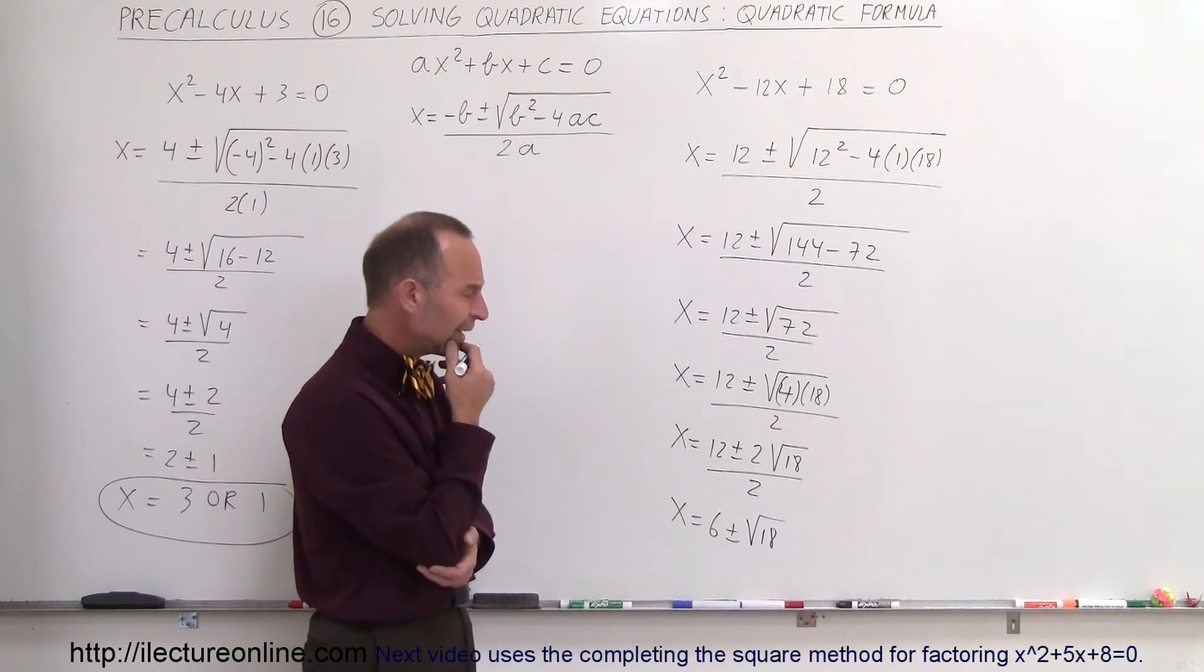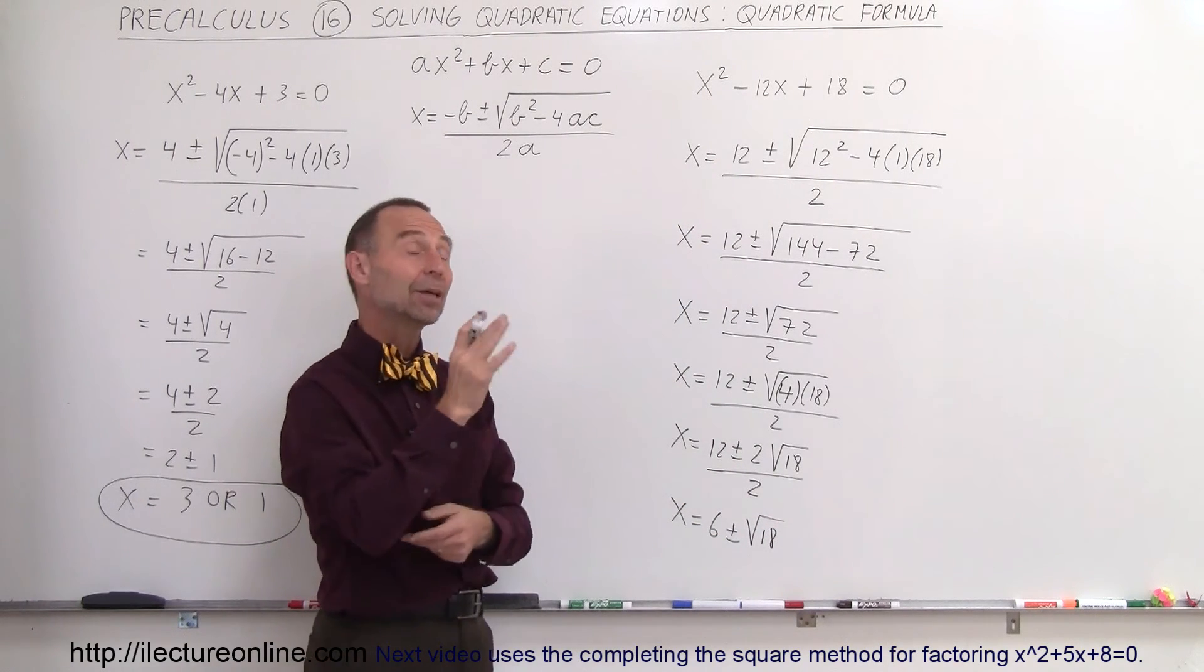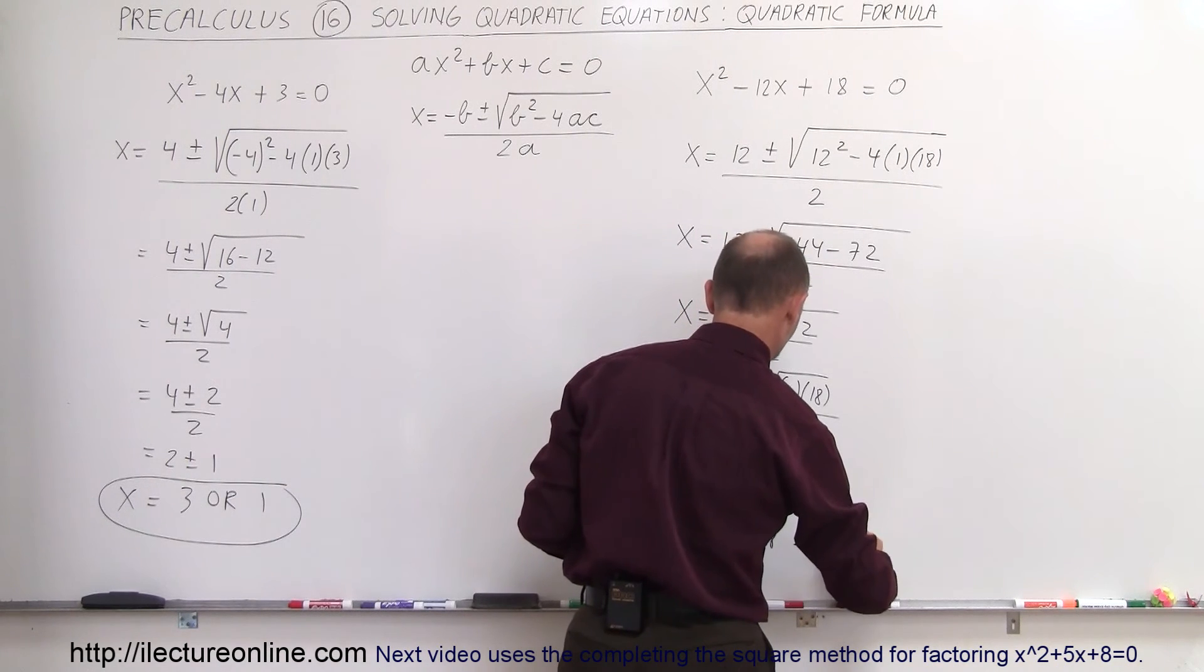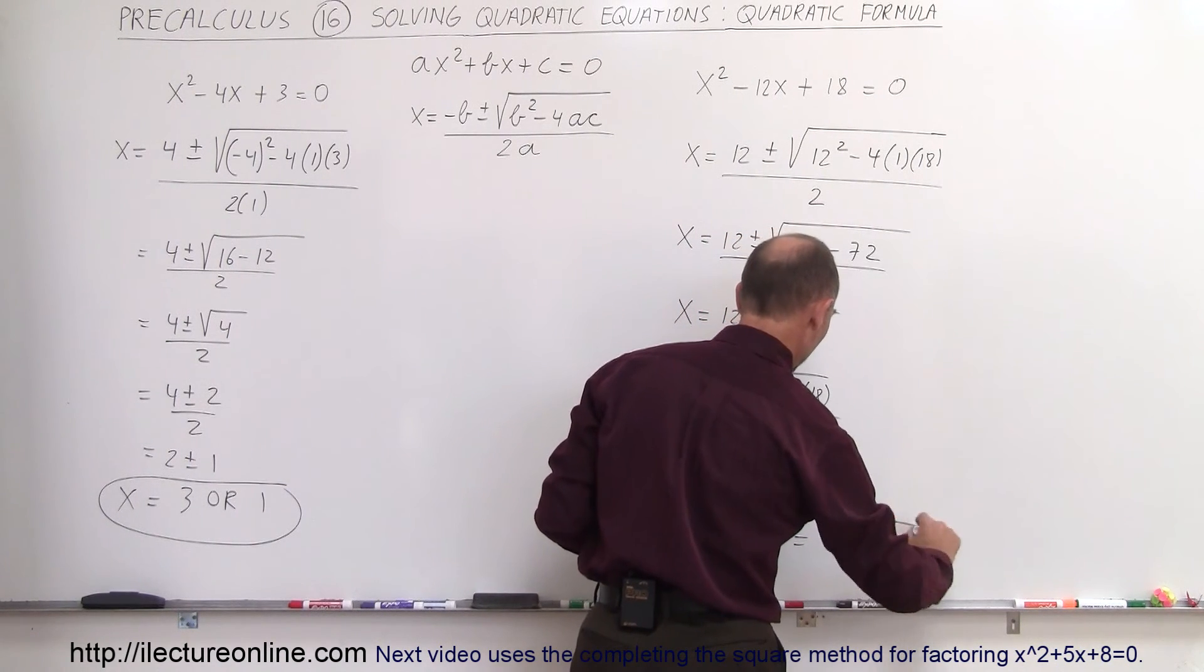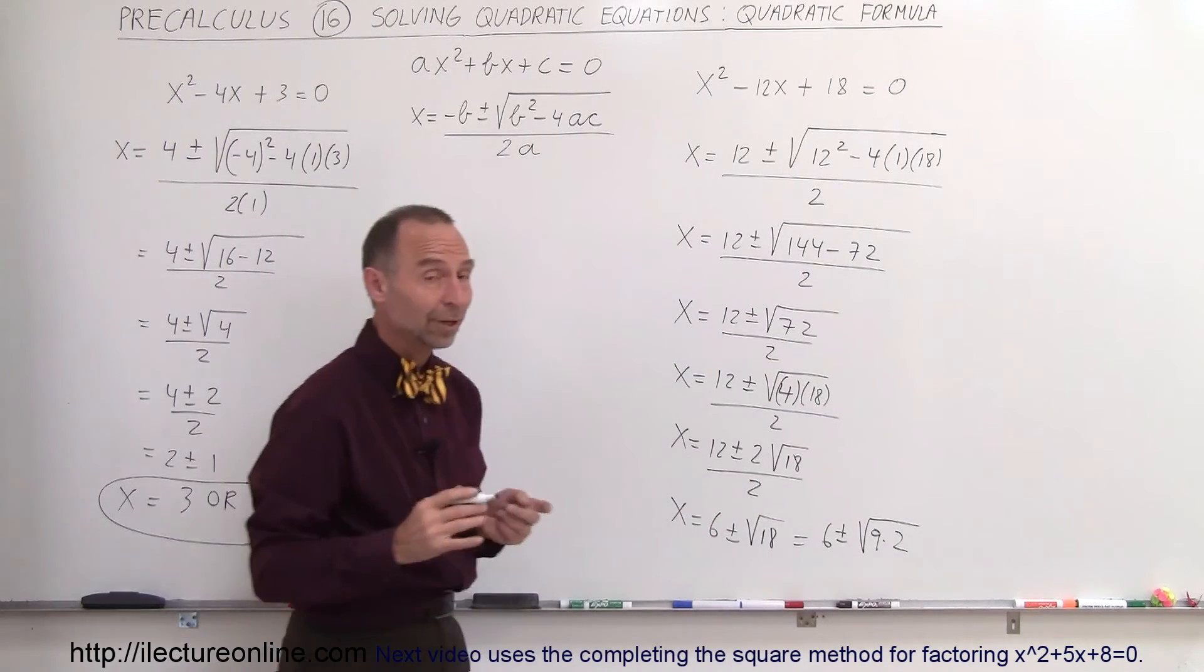We get x is equal to 6 plus or minus the square root of 18. And can we simplify the square root of 18 anymore? Yes, we can because we can write it like this. This is equal to 6 plus or minus the square root of 9 times 2. And of course the square root of 9 is 3.